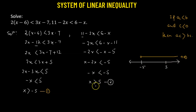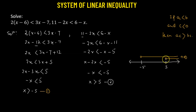From the second solution, x is greater than 5, so we consider all values to the right of x equals 5. Here also, 5 is not part of the solution, so I've used a bubble. Now we find the region common to both solutions — that common region is the intersection of the two.